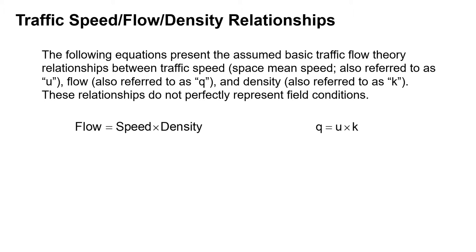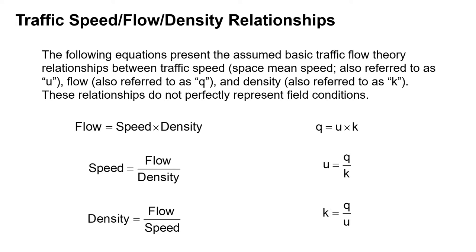Flow is equal to the speed times the density, or Q equals U times K. The speed equals the flow divided by the density, so U equals Q divided by K. And the density equals the flow divided by the speed, or K equals Q divided by U.